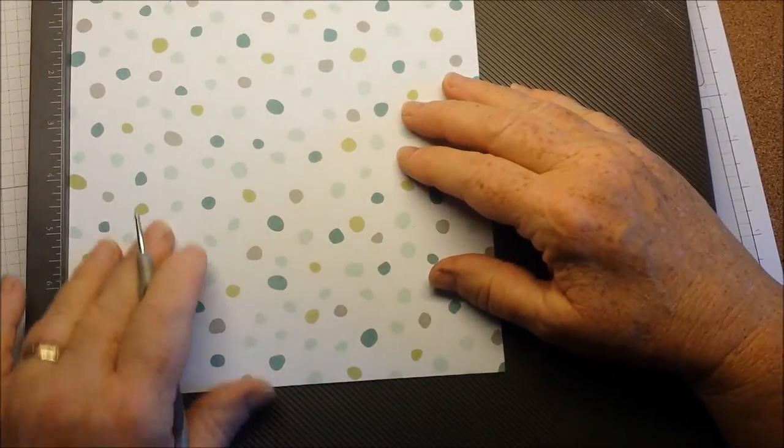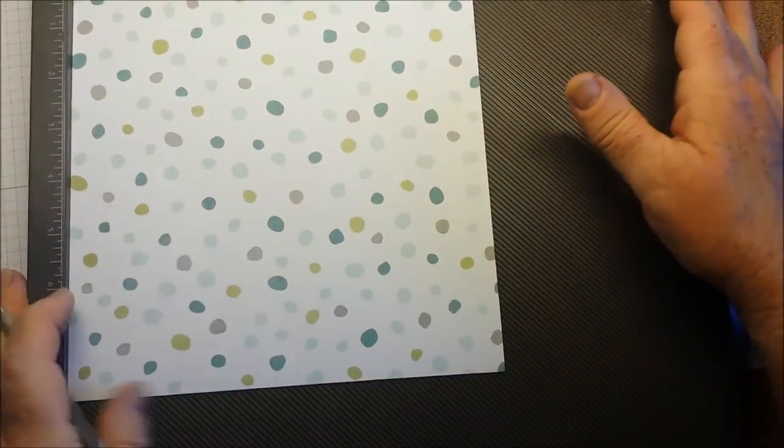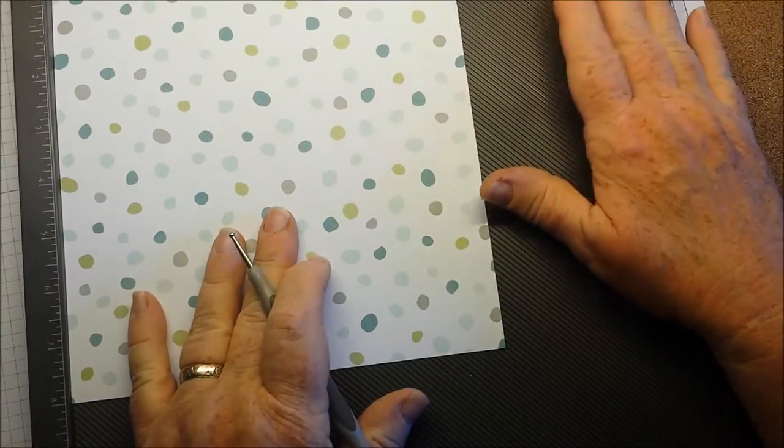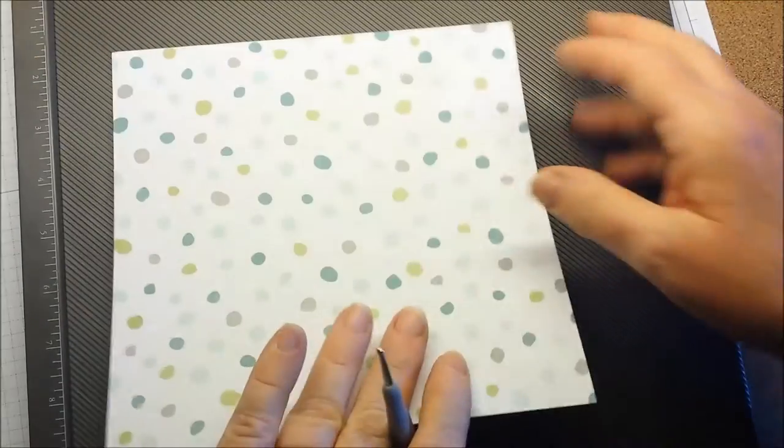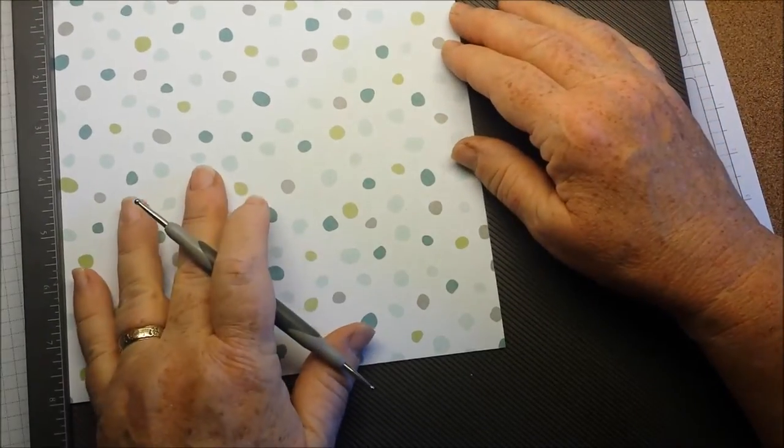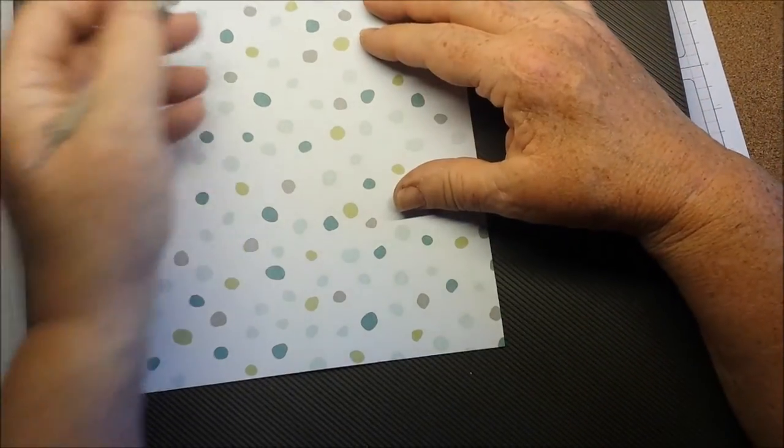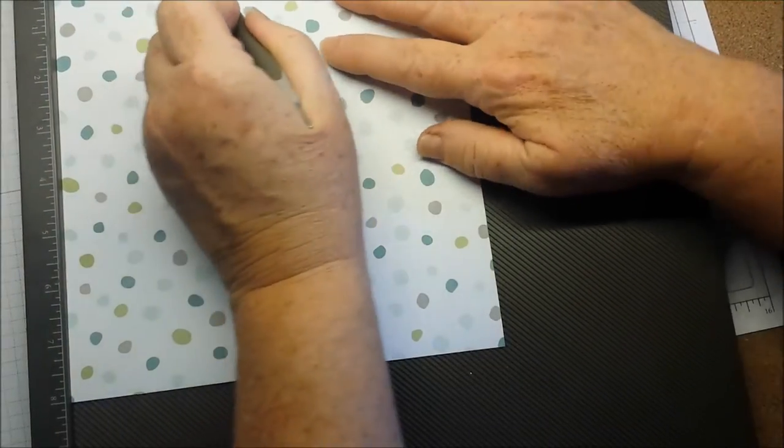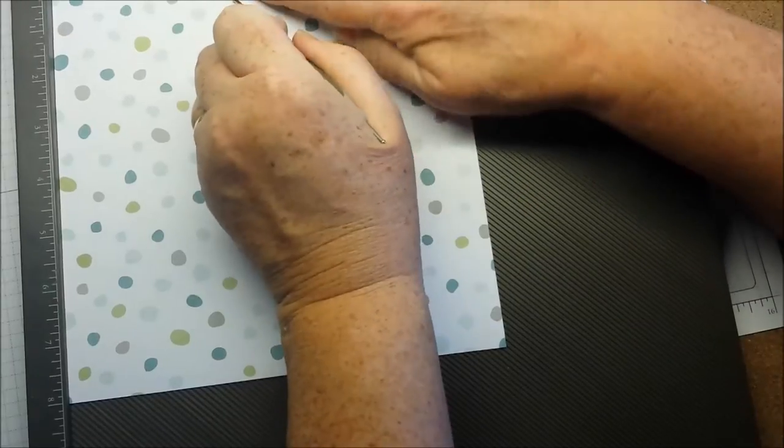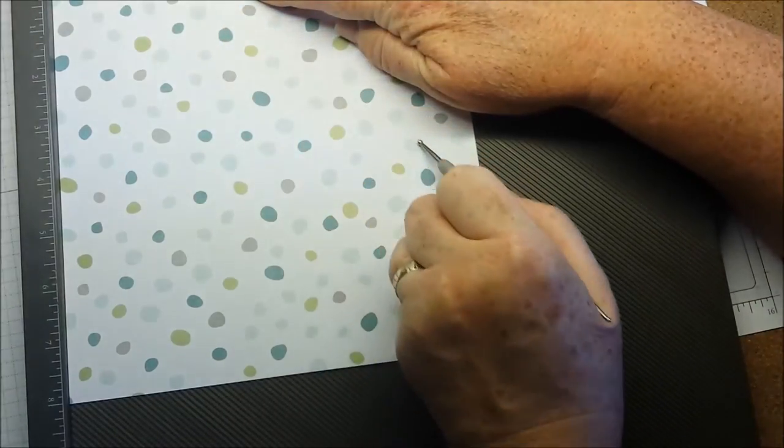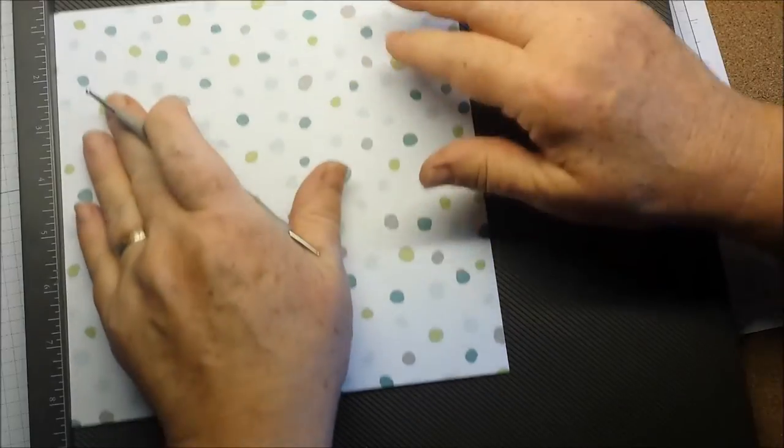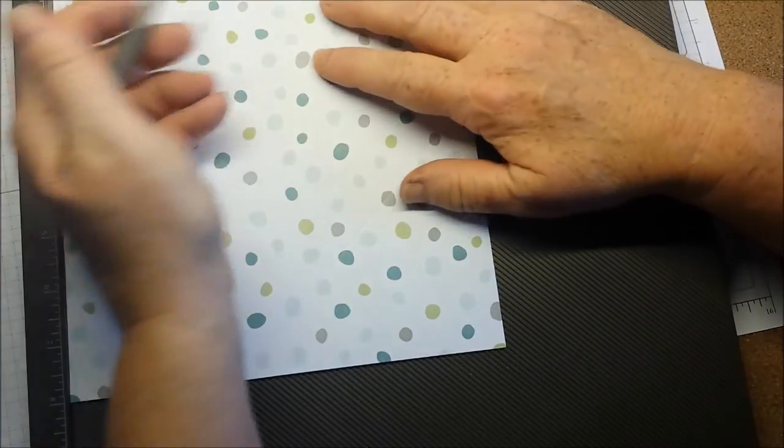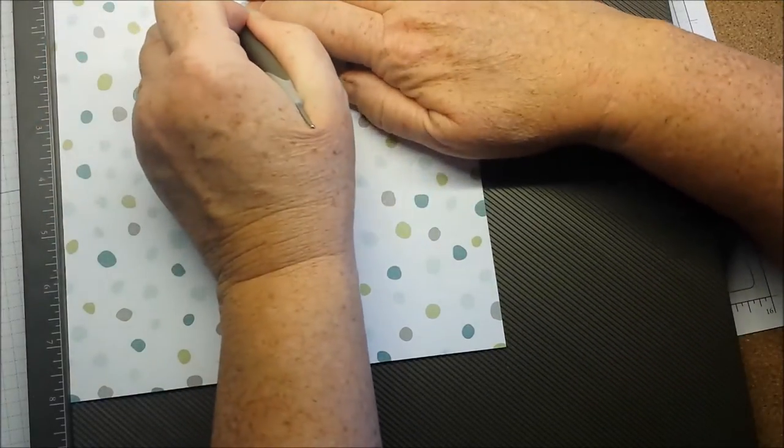The first thing we're going to do is use our Simply Score tool with a diagonal plate in. You're going to take your 8x8 designer series paper and score it at 3 inches diagonally. And I'm using the larger end of the stylus.